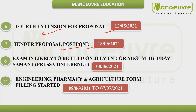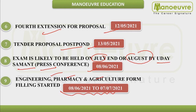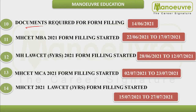The tender date was postponed. The exam was expected in July or August month. In a press conference, the higher technical and education minister stated the exam would be in June. Then engineering, pharma, and agriculture form filling started by June.